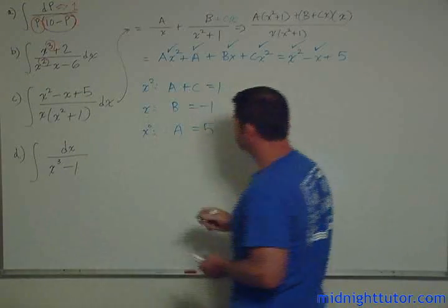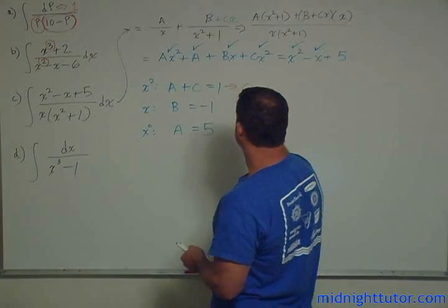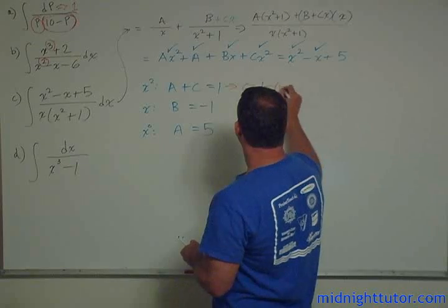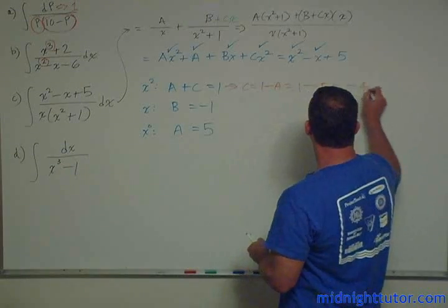So now is there a solution here where this is true? B is minus 1, A is 5, then C is 1 minus A, which is going to be 1 minus 5 is minus 4.